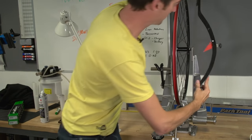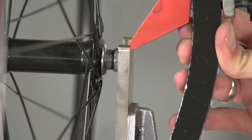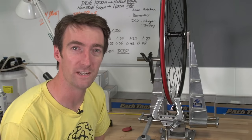Do the same on the other side. Now, as you can see, the dish of our rim is correct, but if you find that your rim is one way or the other,